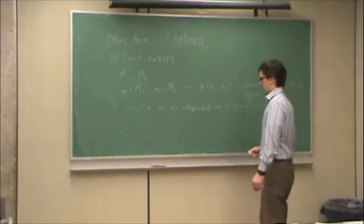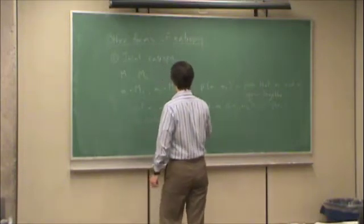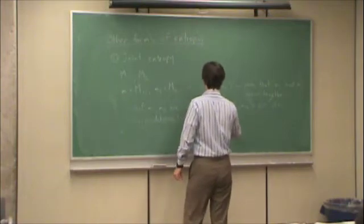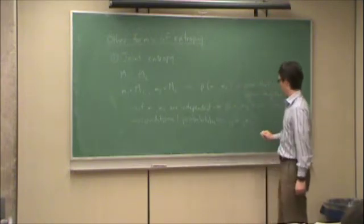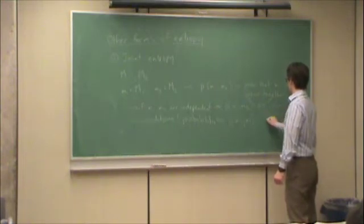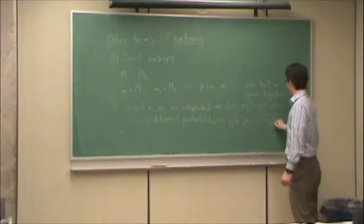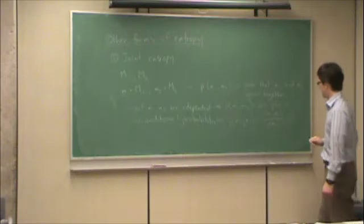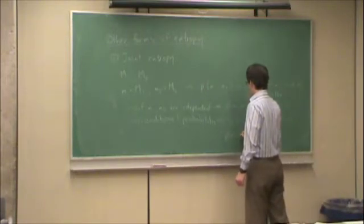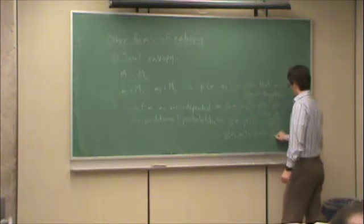Otherwise, we generally have conditional probability. The probability of m1 given m2, by Bayes' rule, this is the probability of m1 and m2 divided by the probability of m2.